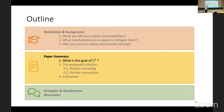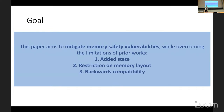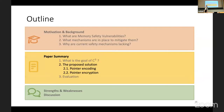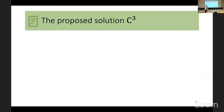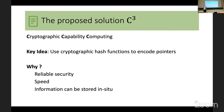Let's go into the proposed solution. The goal of the paper is to mitigate memory safety vulnerabilities while overcoming the limitations of prior works: added state, restrictions on memory layout, and poor backwards compatibility. The key idea of Cryptographic Capability Computing is to use cryptographic hash functions to encode the pointers. This makes sense because cryptography is reliably secure and relatively fast, and the information can be stored within the pointer itself. Since it's encrypted, no one can read it.